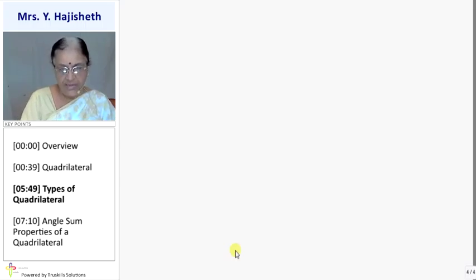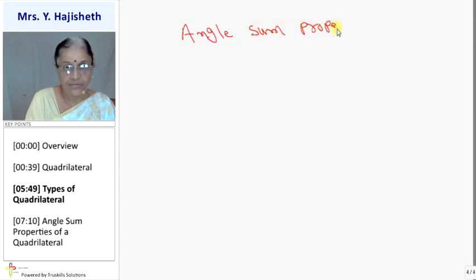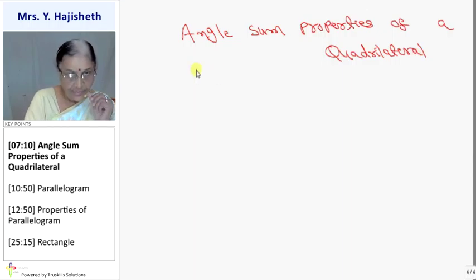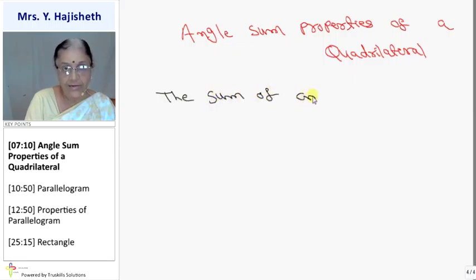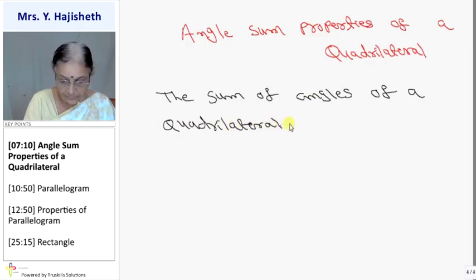What is the angle sum property of a quadrilateral? We learned that the sum of all three angles of a triangle is 180 degrees. Now we are going to learn the angle sum property of a quadrilateral. The sum of angles of a quadrilateral is 360 degrees.